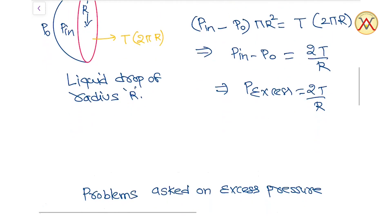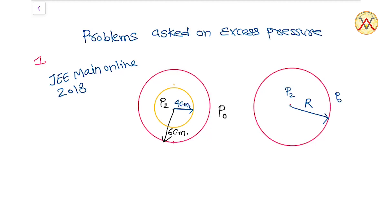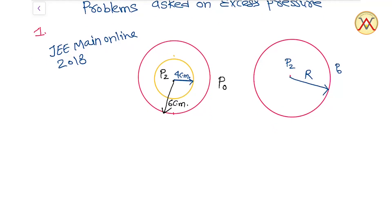Now we will move on to a question asked in JEE Main based on surface tension. The question from JEE Main Online 2018 involves two concentric spherical surfaces. The inner radius is 4 cm and the outer radius is 6 cm. The outside pressure is given as P0 and the inside pressure is P2, inside the inner surface. We have to find the equivalent radius such that the excess pressure inside the second system equals the excess pressure inside the first diagram shown.